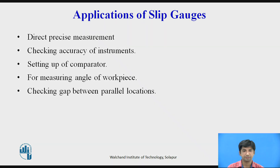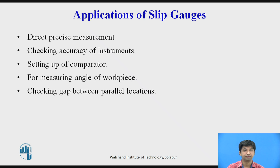Applications of slip gauges include: direct precise measurement where accuracy of the workpiece demands it; checking accuracy of vernier calipers, micrometers, and other measuring instruments; setting up a comparator to a specific dimension; measuring angles of workpieces and angular setting in conjunction with the sine bar; and checking gaps between parallel locations such as in gap gauges or between two mating parts.